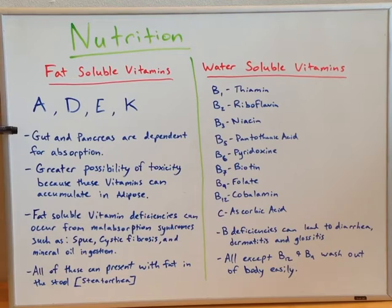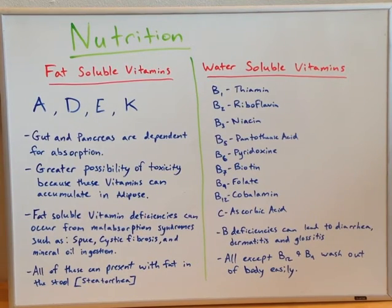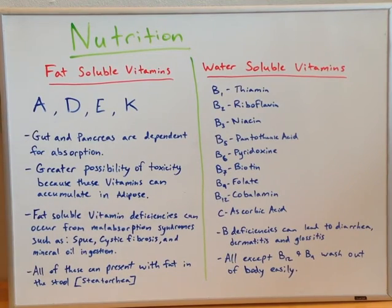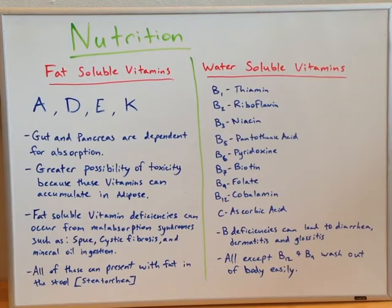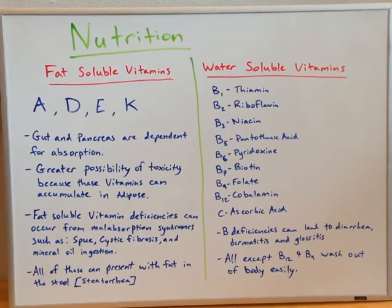The gut and pancreas are required for absorption of fat-soluble vitamins. That is because fat is broken down in your gut and pancreas, and so these vitamins need to be associated with a fat complex in order to be absorbed in the gut.